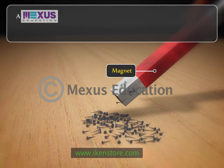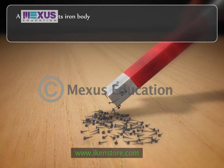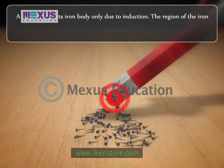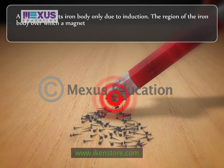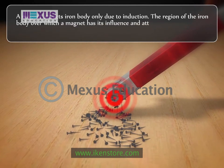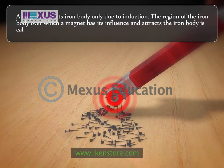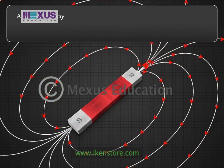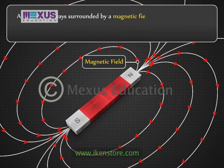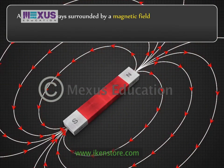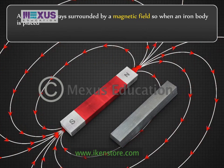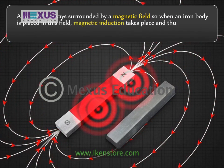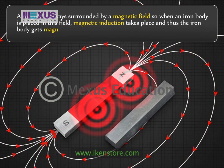A magnet attracts an iron body only due to induction. The region of the iron body over which a magnet has its influence and attracts the iron body is called the magnetic field. A magnet is always surrounded by a magnetic field, and when an iron body is placed in this field, magnetic induction takes place and the iron body gets magnetized.